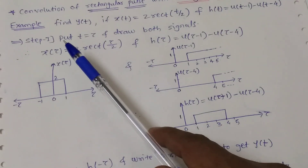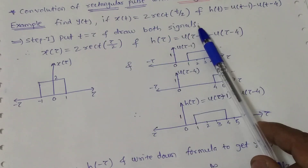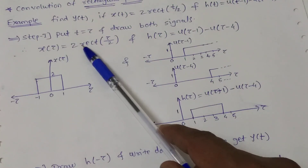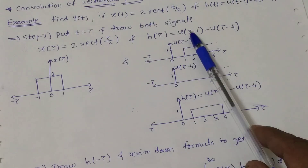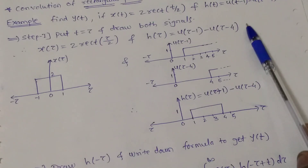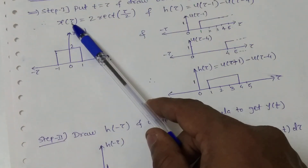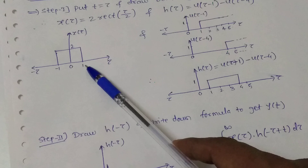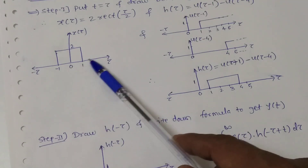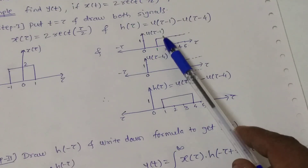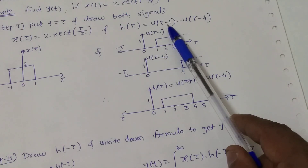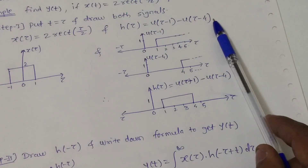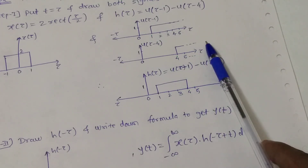Step 1 is to put t equal to tau everywhere and draw both signals. So x(t) becomes x(τ) = 2·rect(τ/2), and h(τ) = u(τ-1) - u(τ-4). Plotting the first signal: it is a rectangular pulse with amplitude 2, starting from -1 and ending at 1. For the second signal, we draw u(τ-1) — a delayed step signal starting at 1, tending to infinity — and u(τ-4), a delayed step signal starting at 4, tending to infinity.